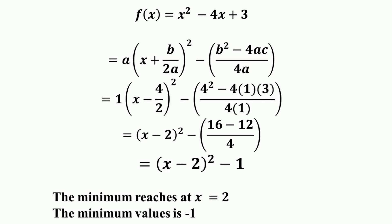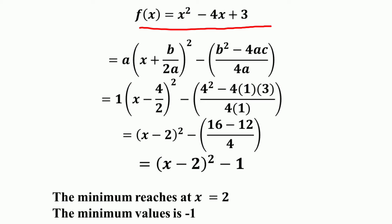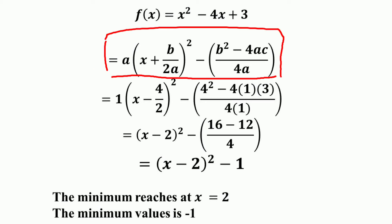Now we will find the maximum or minimum point of a given quadratic function using the method of completing the squares, and also discuss the shortcut method. We apply the formula derived previously. The given function is f(x) = x² − 4x + 3, where a = 1, b = −4 and c = 3. Substituting into the formula: a·(x + b/2a)² − (b² − 4ac)/4a.